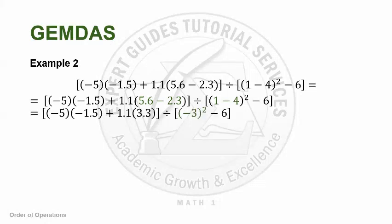Having said that, the next equation would be negative 5 times negative 1.5 plus 1.1 times 3.3 divided by negative 3 squared minus 6. Again, following GEMDAS, what can we perform next? In the first bracket, we can perform the multiplication since there's no more exponent. So multiplication or division. From left to right, what comes first? Multiplication. It's negative 5 times negative 1.5.